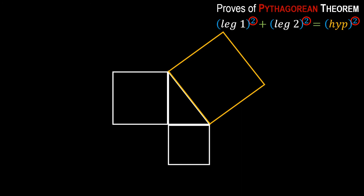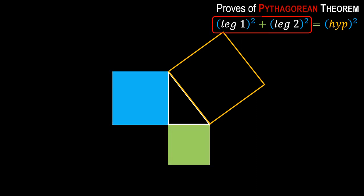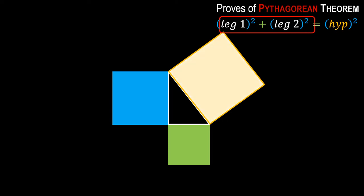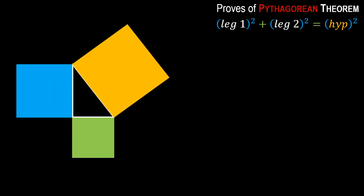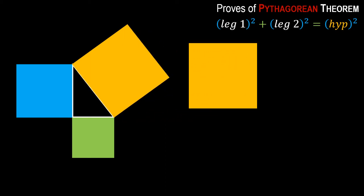According to the theorem, I have to prove that if we add up the area of these two squares — the blue and the green — they should be equal to the area of this golden square. Since we need to compare the area of the two smaller squares to the area of the large square, I am writing this large square here so that we can easily compare.